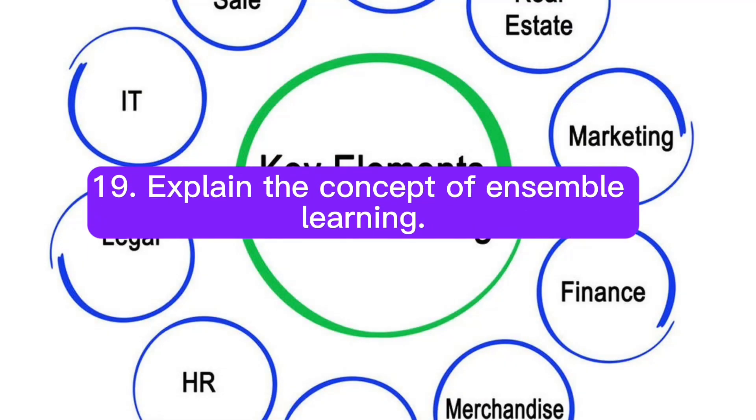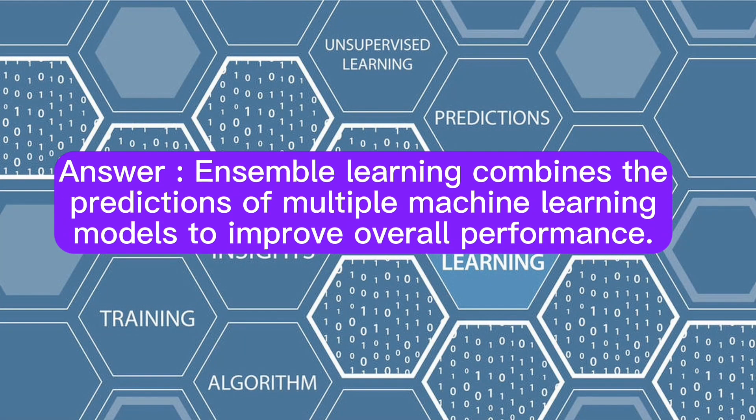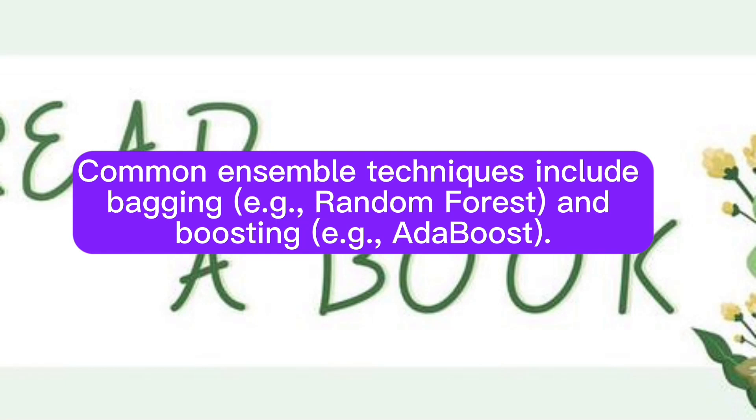Question 19: Explain the concept of ensemble learning. Answer: Ensemble learning combines the predictions of multiple machine learning models to improve overall performance. Common ensemble techniques include bagging (for example, random forest) and boosting (for example, AdaBoost).